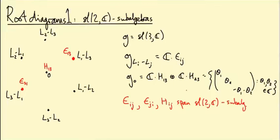Everything we studied about weight diagrams of sl3C representations used this fact. It gave us a Weyl symmetry: the whole picture has to be symmetric about the line orthogonal to the line connecting the opposite roots — a reflection symmetry. That's what gave us the fact that all weight diagrams were hexagonal or triangular. This is a really key thing, and it will generalize to all semisimple Lie algebras of compact groups, which is what we're going to prove today.